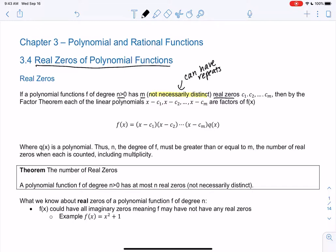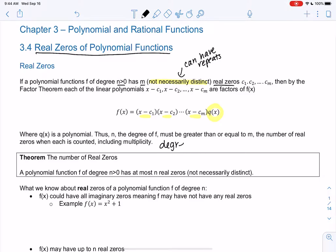Then, by the factor theorem, we can rewrite f of x as factors with all the zeros. So we'll have the first zero, second zero, up to m zeros, and there might be another polynomial left over that has no zeros, no real zeros. So q of x is a polynomial, and then n must be greater than or equal to m. So the degree is greater than the number of zeros, or equal. That's the main idea here.